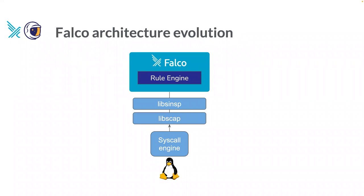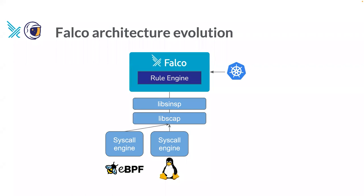If you've been following the Falco project for a while, you might know that back when the CNCF first adopted it — at least four years ago — there was only one way to capture system calls. You had your Libscap kernel module and a monolith on top running the rule engine. Then it got support for Kubernetes audit events, which are events that are not system calls. After a while it also got support for eBPF, a very cool technology that allows you to write code that runs directly in the Linux kernel without writing a kernel module, in a much safer way.